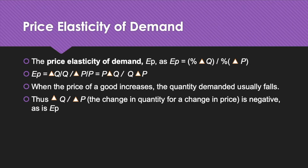Where %ΔQ means the percentage change in quantity demanded and %ΔP means the percentage change in price. Since the percentage change in a variable is the absolute change divided by the original level, we can write Ep as (ΔQ/Q) divided by (ΔP/P). Rearranging, this equals (ΔQ/ΔP) × (P/Q), which is equal to P·ΔQ divided by Q·ΔP.